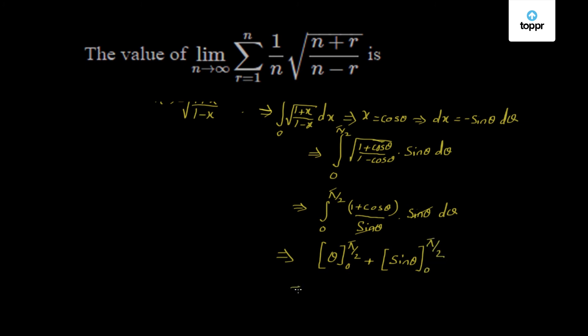This gives: at θ equals π/2, the value is π/2; at θ equals 0, it is 0. For sin θ: sin 90° is 1 minus sin 0° is 0. So the value of the given limit is equal to π/2 plus 1.